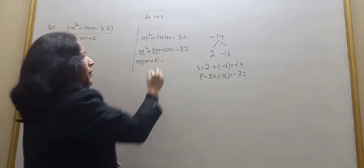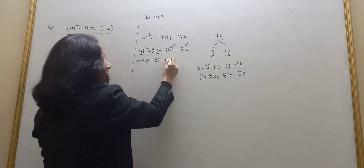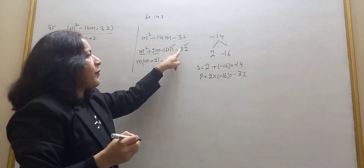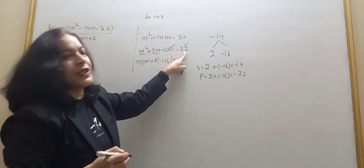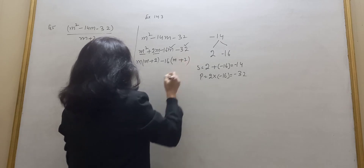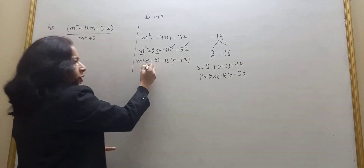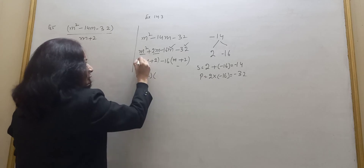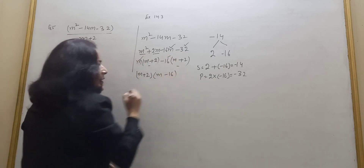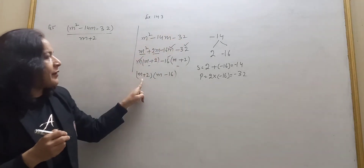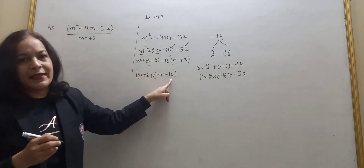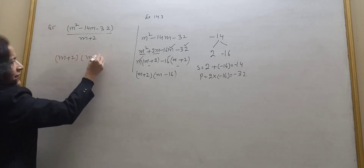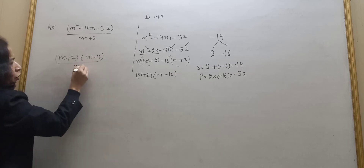Take 16 common from here: outside minus, and 16 outside, leaving plus 2 inside — because minus is outside. So we get m plus 2 here. Now take m plus 2 outside as a common factor, leaving m from the first group and minus 16 from the second. So the algebraic expression factors as m plus 2 into m minus 16, and in the denominator we have m plus 2.